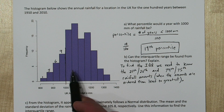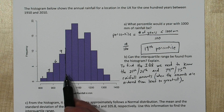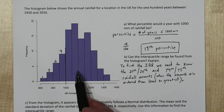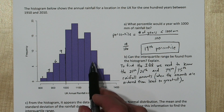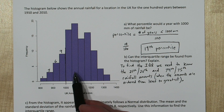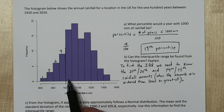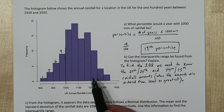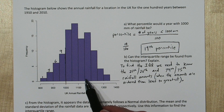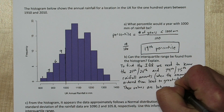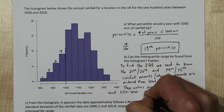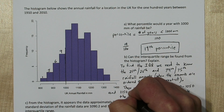The problem is when we try to do that, the 25th and 26th as well as the 74th and 75th values are stuck somewhere within these bars. In fact, the 25th to 26th is somewhere between 1000 and 1050 millimeters, and the 74th and 75th is between 1150 and 1200 millimeters of rain. We don't know the exact values, so we could really only estimate the IQR.